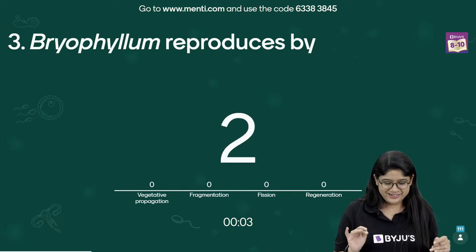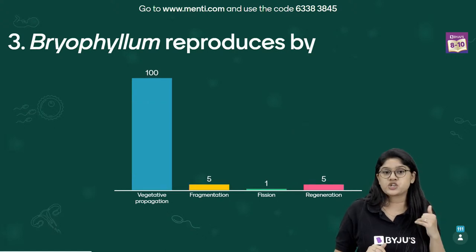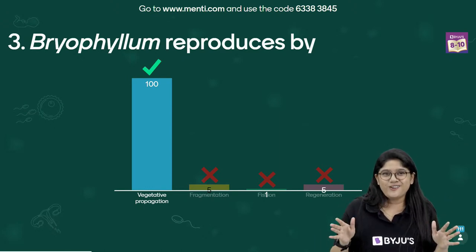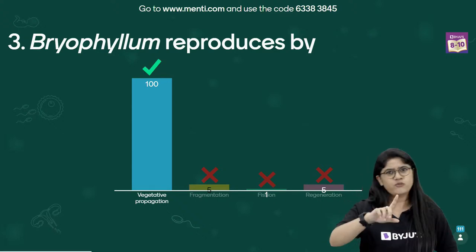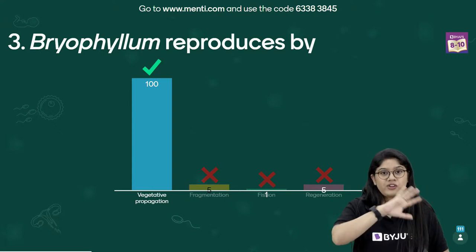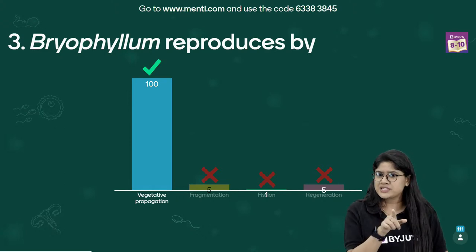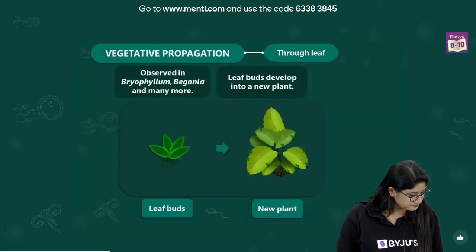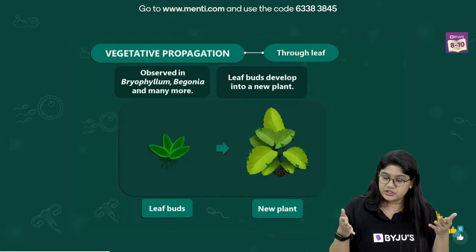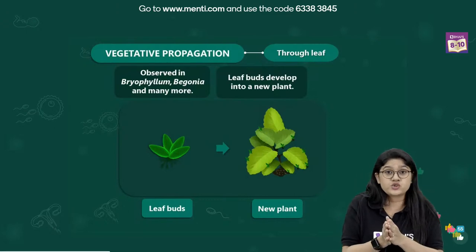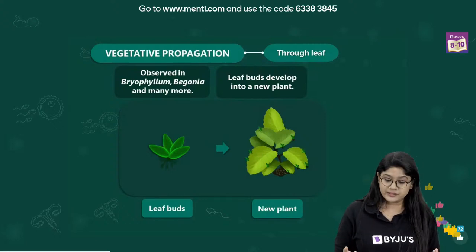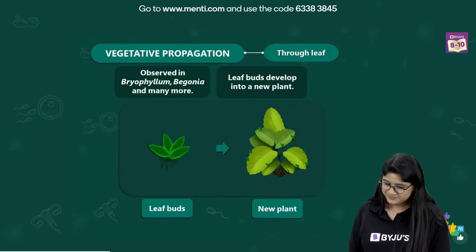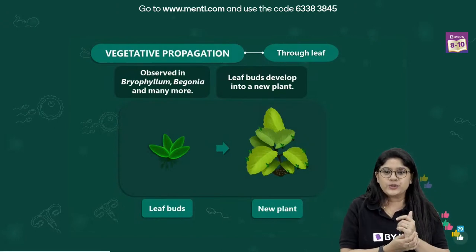Time's up! Dryophyllum reproduces by vegetative propagation — almost 100% of you got it correct. One person voted fission and five voted fragmentation or regeneration — I'm sure those are misclicks. The correct answer is vegetative propagation, which happens through the leaves — not the reproductive parts. Dryophyllum is a beautiful plant and a great example.